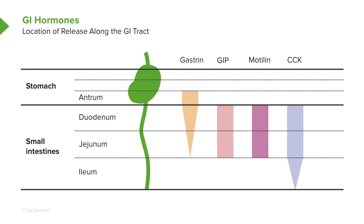Cholecystokinin is released throughout the small intestine but tapers off in the ileum. And finally, secretin follows a very similar pattern of being primarily released in the duodenum and tapering in the ileum.